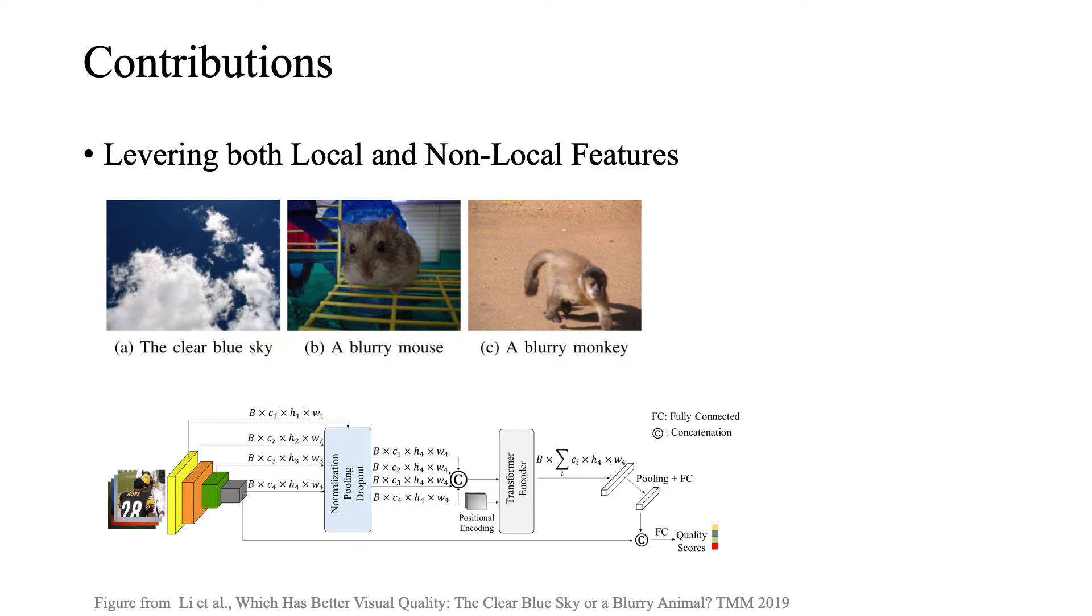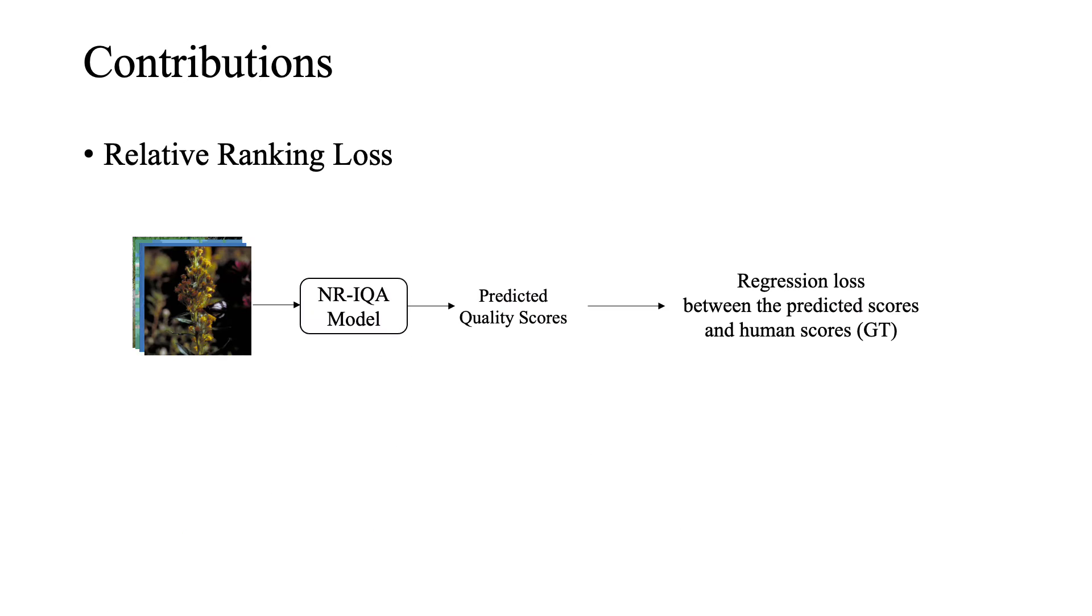Therefore, we propose a model that uses both local and non-local information of an image by leveraging CNNs and self-attention mechanism of the transformers. Due to the absence of the original reference image and only the availability of human subjective scores, most of the NRIQA methods address the quality assessment problem as a regression problem, where the main objective will be to optimize the model to be able to reduce the regression loss during the training.